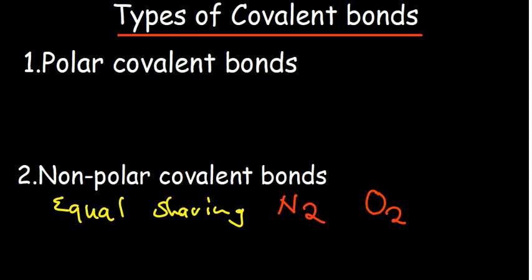Equal sharing of electrons is what we call non-polar covalent bonds. In a bond where there is equal sharing of electrons, we know that a bond consists of two electrons. So, these two electrons, if they are shared equally, it's a non-polar covalent bond.